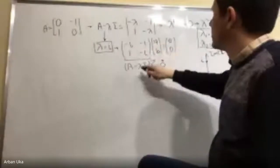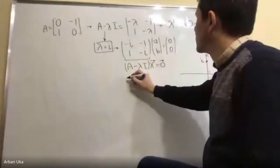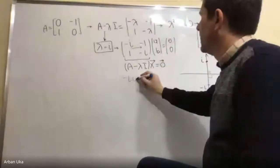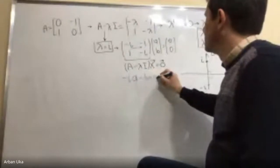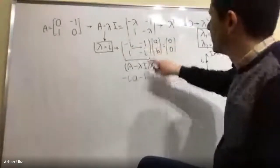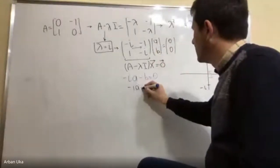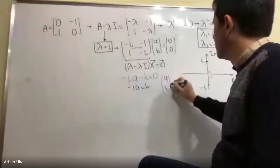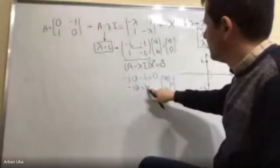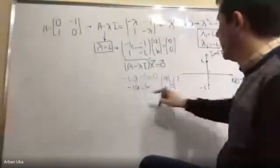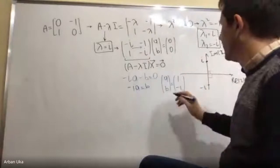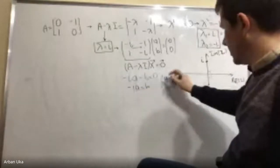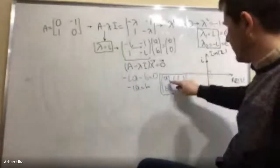Since the rank is one, we need only one equation: minus i·a minus b equals zero, which gives minus i·a equals b. Setting a equal to one, we get b equal to minus i. So the first eigenvector is [1, -i]. We can verify: one times minus i satisfies the equation.